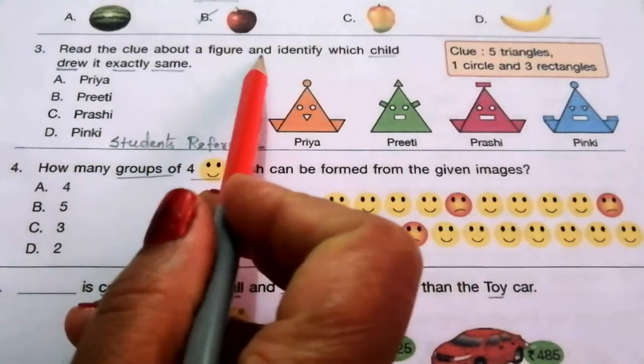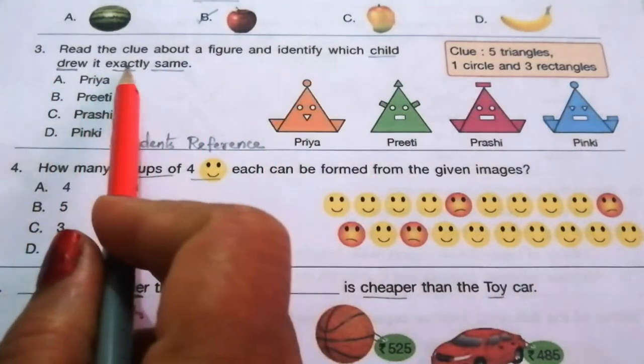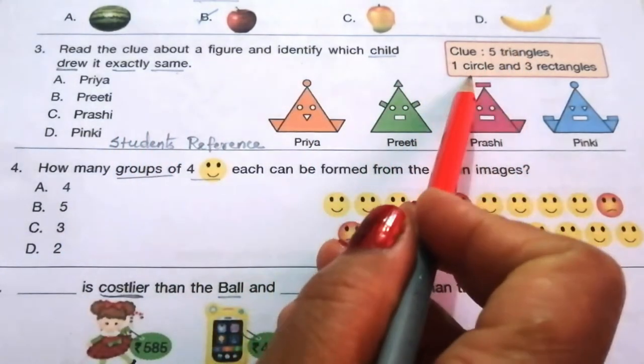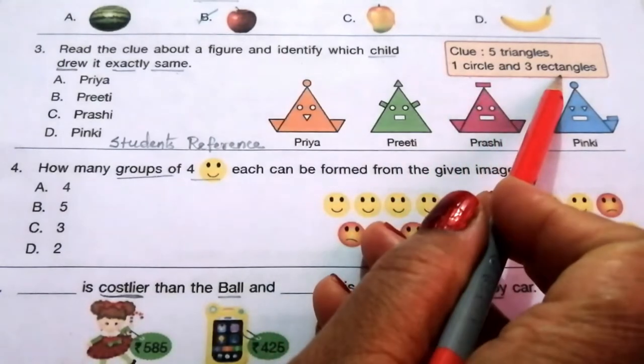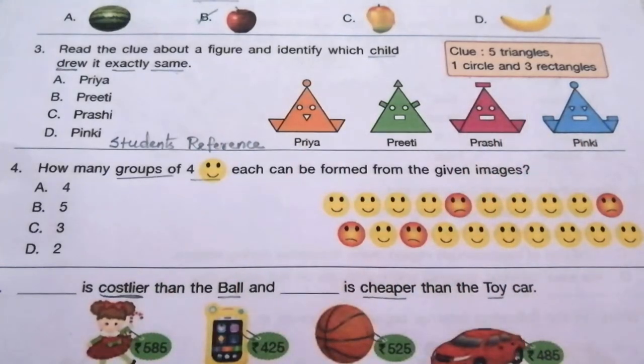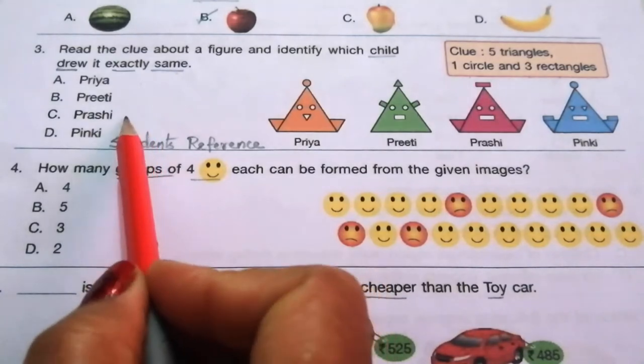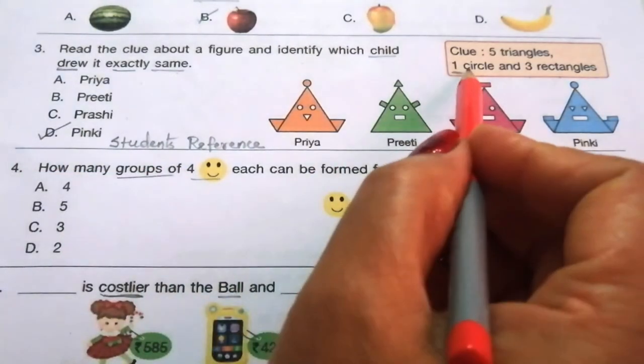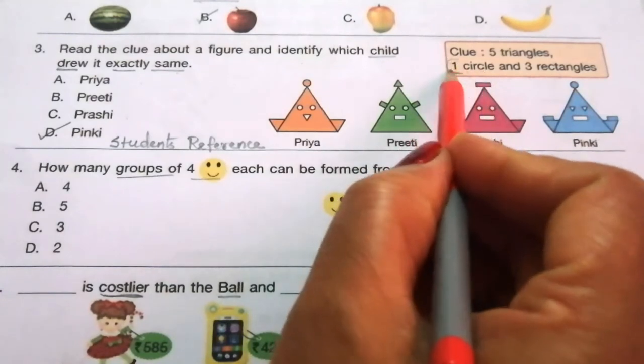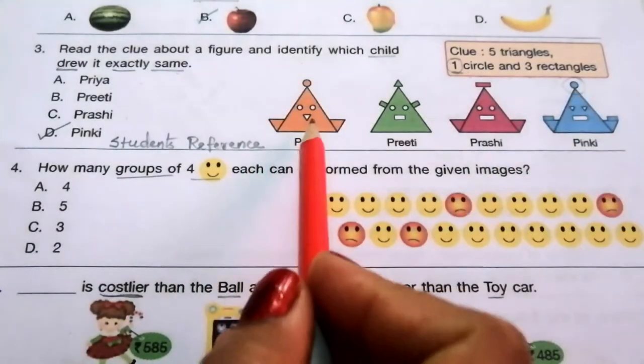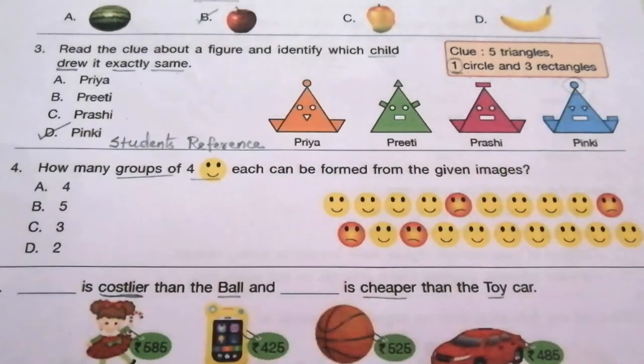Question 3: Read the clue about a figure and identify which child drew it exactly the same. Clue: five triangles, one circle, and three rectangles. Look at the given figures. The options are Priya, Preethi, Prashy, Pinky. The answer is D, Pinky. To find the answer easily, first verify the circle. Only Pinky has one circle, while more than one circle is available in the remaining three figures.